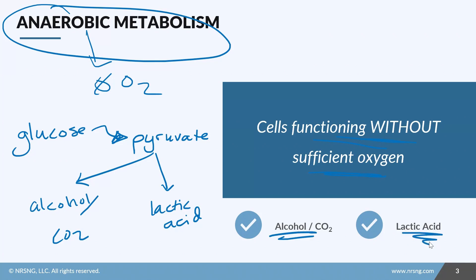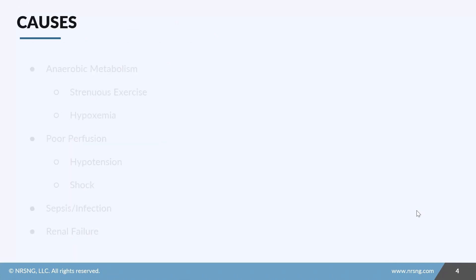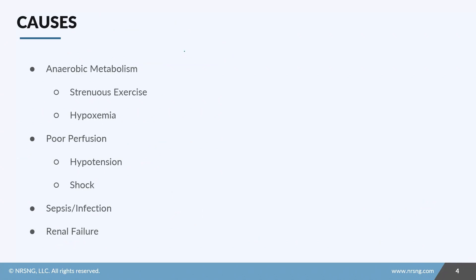Any time we force the body to function without enough oxygen, we'll end up with a buildup of lactic acid. Strenuous exercise, especially for a prolonged period of time, can cause a slight buildup. Some personal trainers say your muscles need to burn from lactic acid — and typically this is temporary and not harmful. We could also see anaerobic metabolism from a simple lack of oxygen in the blood.